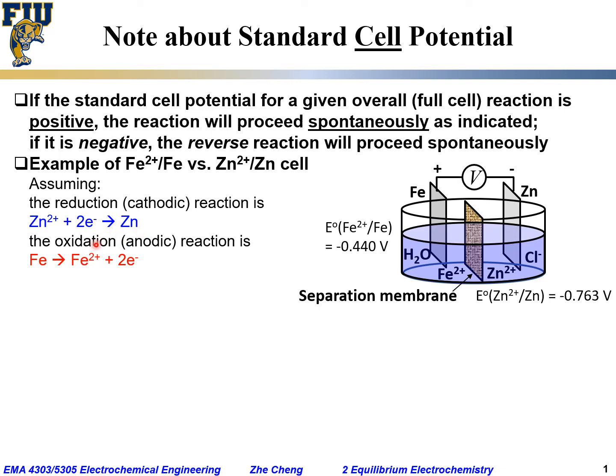The oxidation or anodic half-cell reaction is iron gives out electrons to become Fe2+. If we can make these two assumptions.